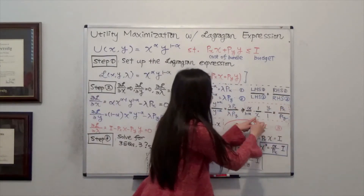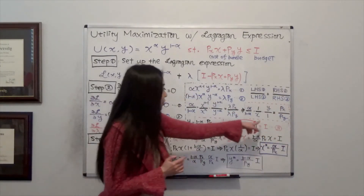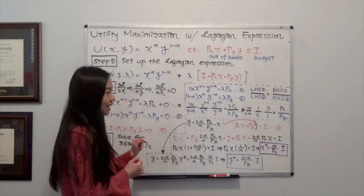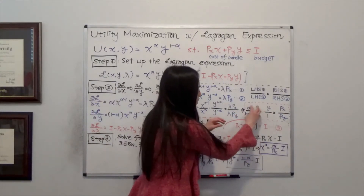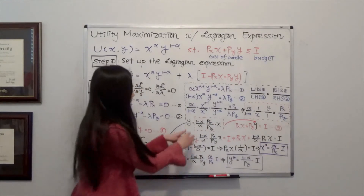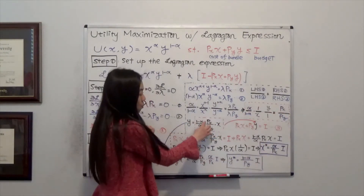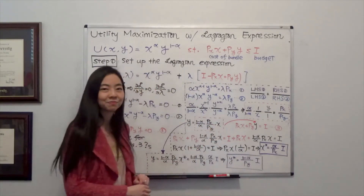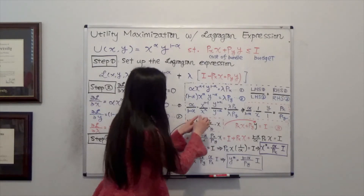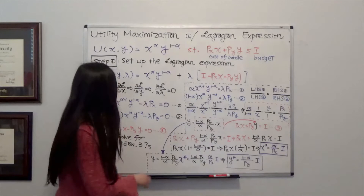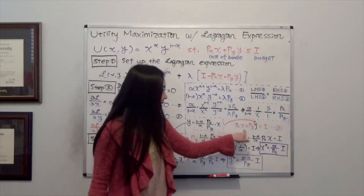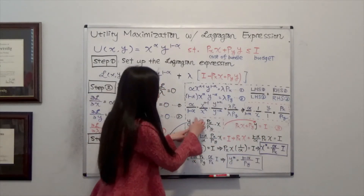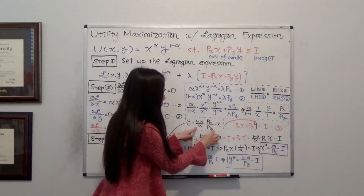So I'm left with the expression: alpha over 1 minus alpha times y over x equals p_x over p_y. From this, I can express y as a function of x. Moving all terms to the right-hand side, I get y equals 1 minus alpha over alpha times p_x over p_y times x.